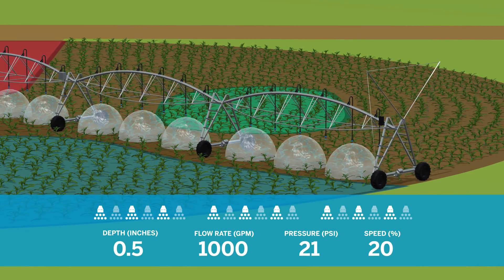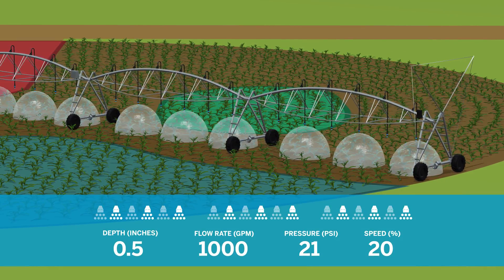While the pivot is moving across the field, nozzles pulse to apply the defined amount of water.